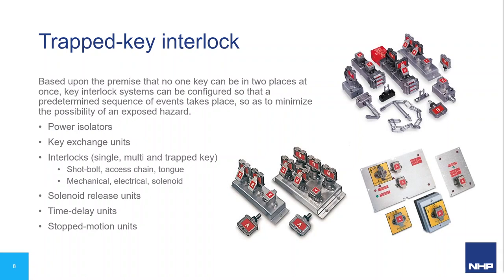Exchange units for trapped key switches link together other devices in the ProSafe range for more complex operating sequences — for example, one key in from an isolator releases five separate keys to open multiple guards, and all guards must be locked with keys returned before the isolator can be turned back on. Rotary interlock switches are used to isolate machinery for safe access and can also be used as teach boxes for robot cells. Once power is turned off the key can be withdrawn and used in the next sequence, such as unlocking an access hatch or entering a key exchange system. The switch can be panel-mounted or supplied pre-mounted in an enclosure.